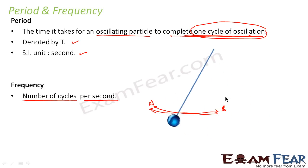That means how many cycles are executed or how many times the oscillating particle is repeating the same pattern. That means here just now I told you that this is one cycle going from point A to point B and coming back from B to A. So this was one cycle.